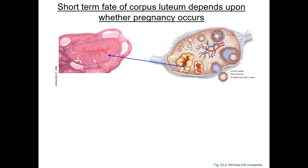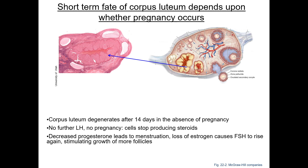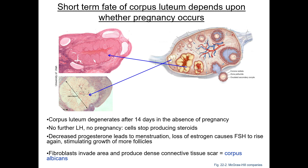The fate of the corpus luteum depends on whether pregnancy occurs. If there is no pregnancy, the corpus luteum degenerates, cells stop producing steroids, and the drop in progesterone leads to menstruation, while the loss of estrogen negative feedback causes FSH levels to rise again, stimulating new follicle growth. The remains are phagocytosed by macrophages, and fibroblasts produce a dense connective tissue scar called the corpus albicans. If pregnancy occurs, the corpus luteum is maintained for several months by human chorionic gonadotropin from the trophoblast, stimulating continued progesterone secretion to maintain the uterine mucosal lining until the placenta produces estrogen and progesterone at around four to five months.